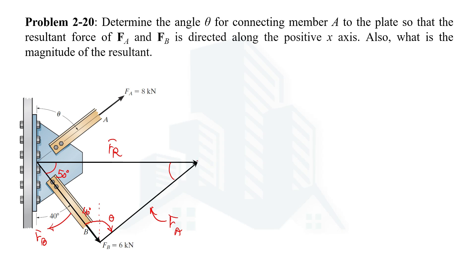Let's say this angle is x degrees. So you know that the summation of all the angles should be 180, so 180 degrees equals 50 degrees plus 40 degrees plus theta plus x degrees. So from here you can determine x, and on doing calculations you are going to get 90 minus theta.